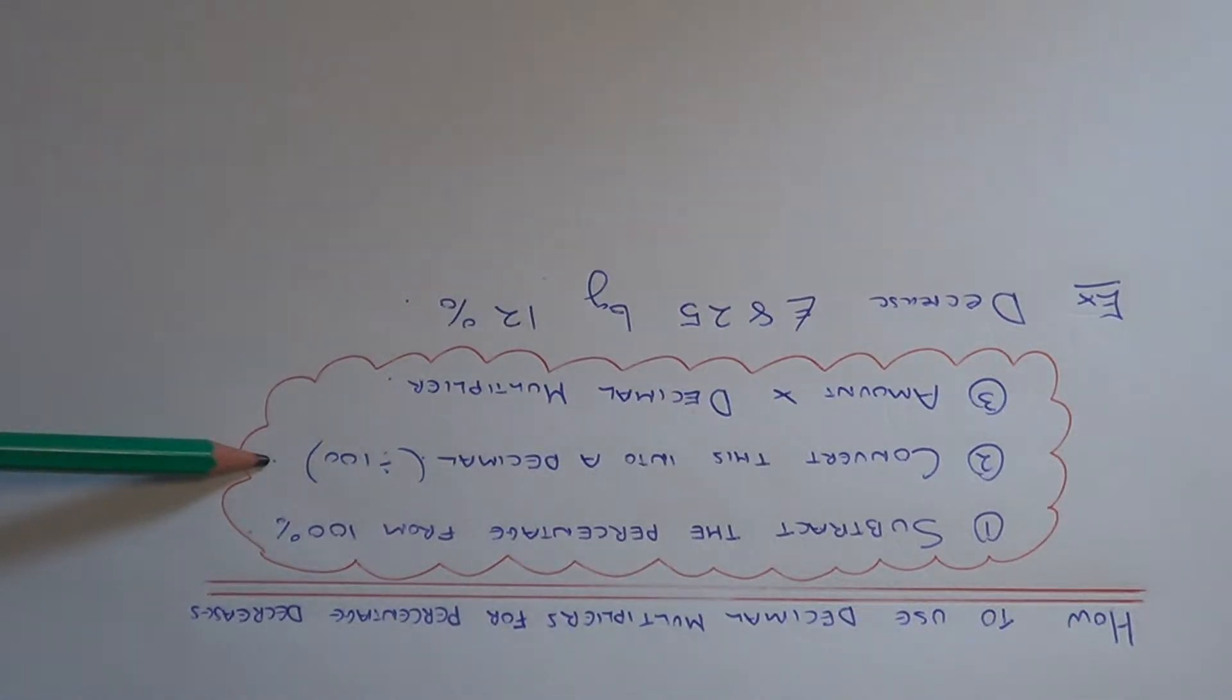This will give you your decimal multiplier. And the final step is to multiply the amount that you have by the decimal multiplier.